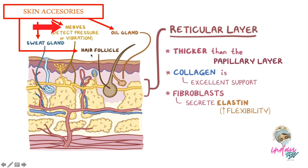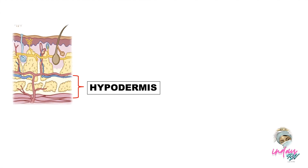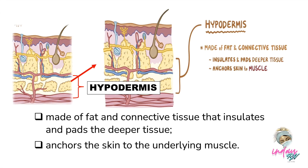Just below the reticular layer is the hypodermis, made up of fat and connective tissue that insulates and pads the deeper tissue and anchors the skin to the underlying muscle.